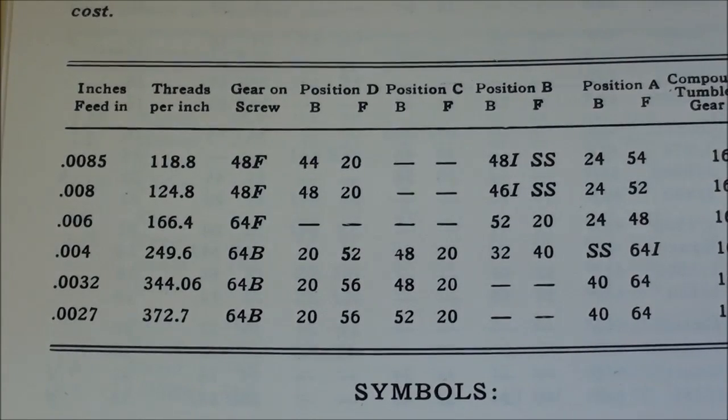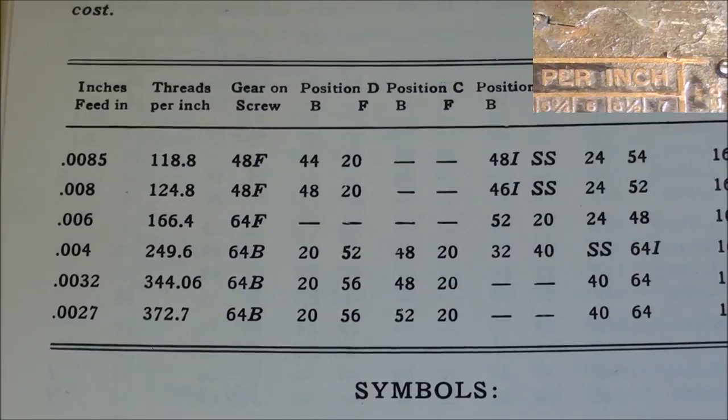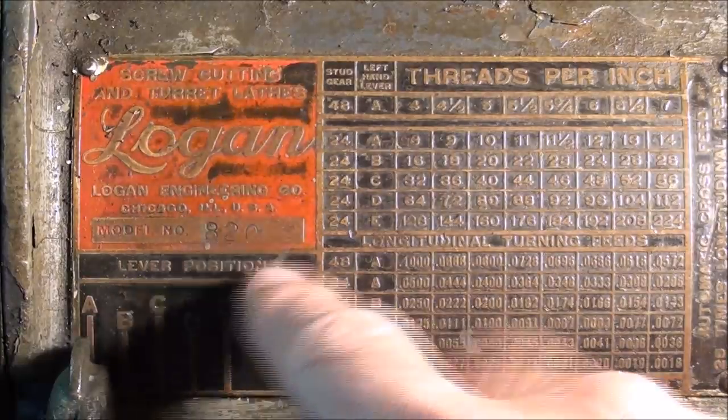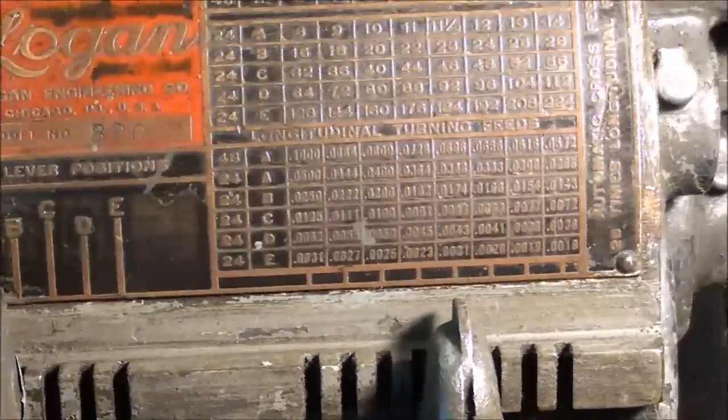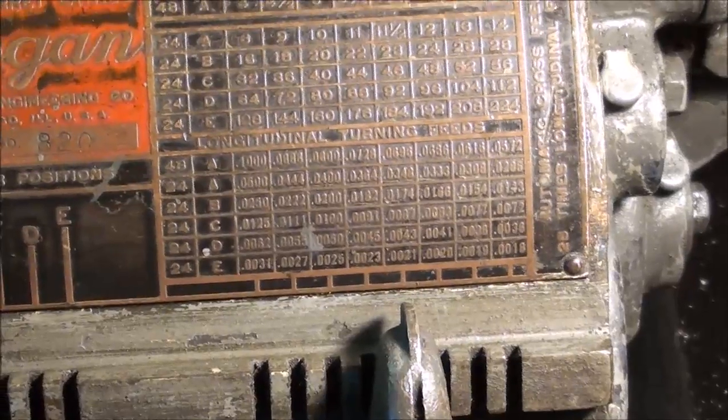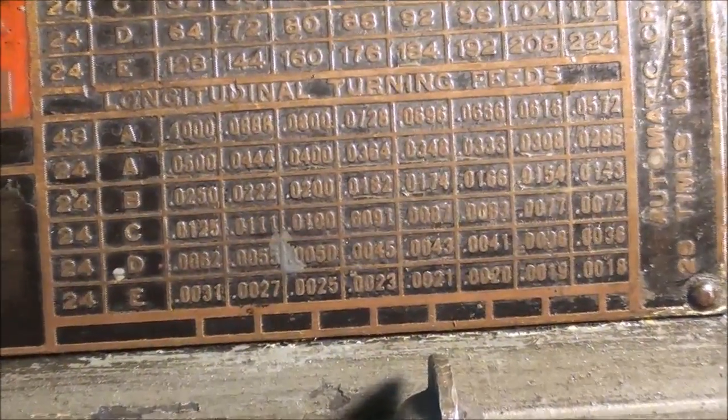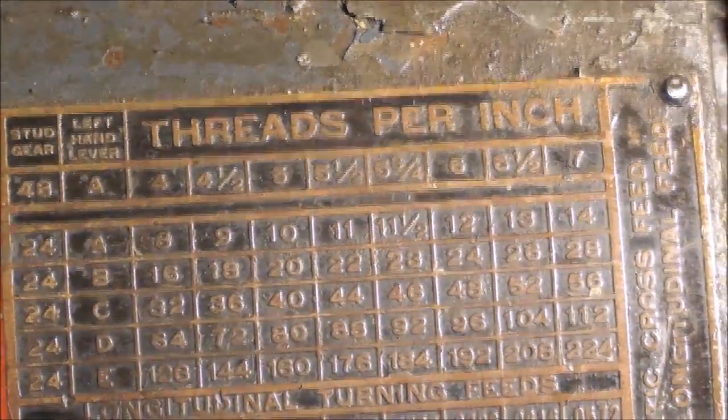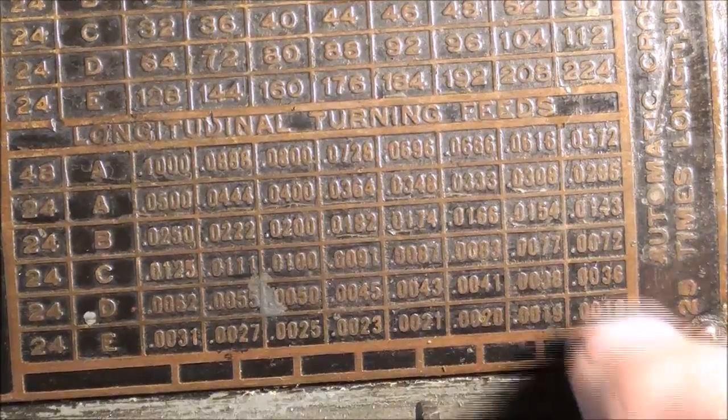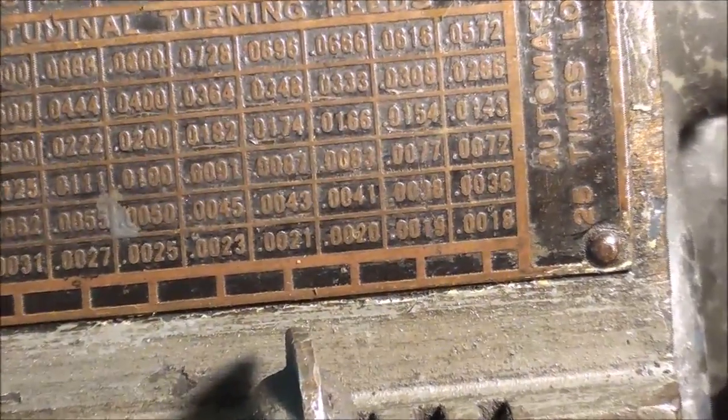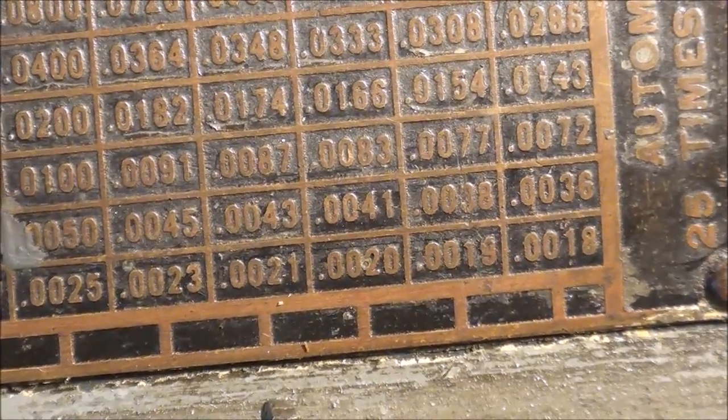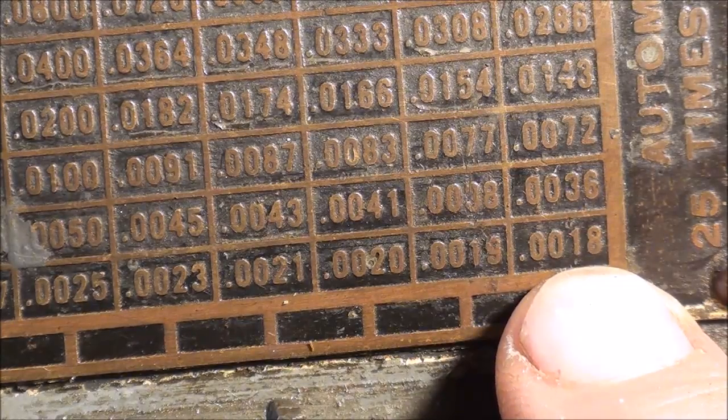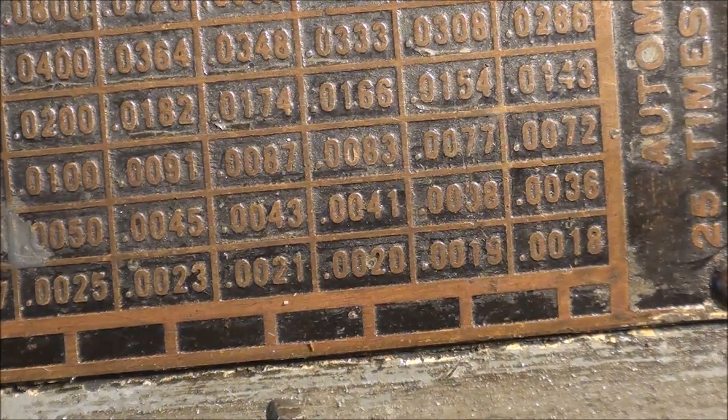Let's take a look at some other lathes and see what they offer. I'm over at my Logan 820 quick-change gearbox, and it features a slightly finer feed than the Atlas. Looking down here on the bottom row, they show many, many more feeds than what the Atlas does. In the lower right-hand corner, the finest of the feeds there is 18 ten-thousandths, which is just a little bit under two-thousandths.